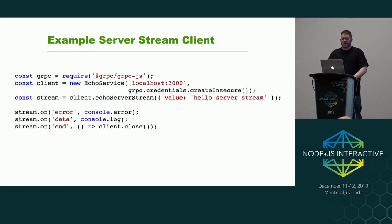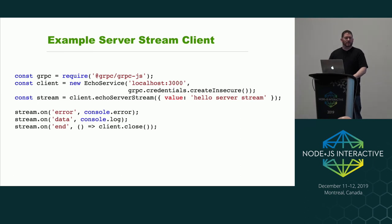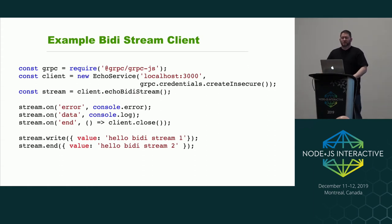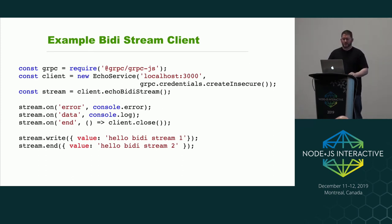For server-side streaming, you call 'client.echoServerStream' with one input — just like in the unary case — but it returns a readable stream. You can attach error handlers, data handlers, and consume as many response messages as the server sends. And then bi-directional streaming is the best of both worlds — you call 'echo.bidiStream' and it returns a bi-directional stream that you can read from and write to however you want.